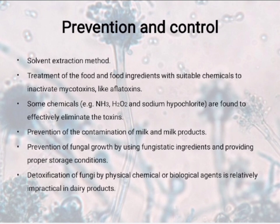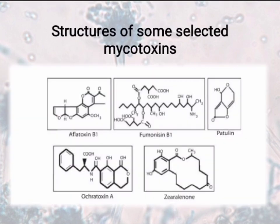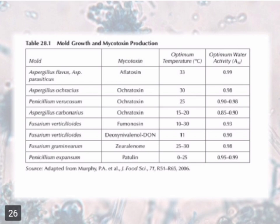Prevention and control of mycotoxins and aflatoxins is done by solvent extraction method. Inactivation of mycotoxins is done by suitable chemicals — these are ammonia, hydrogen peroxide, and sodium hypochlorite — which are found to effectively eliminate the toxins. Fungal growth is prevented by using fungistatic ingredients and providing proper storage conditions. Detoxification of fungi by physical, chemical, or biological agents is relatively impractical in dairy products. These are some structures of mycotoxins — aflatoxin B1, fumonisin B1, patulin, etc. A table describes mold growth and their mycotoxin production, including molds, mycotoxins, optimum temperature, and optimum water activity.